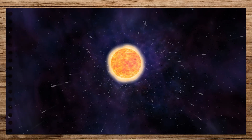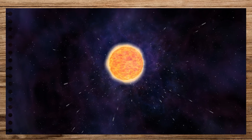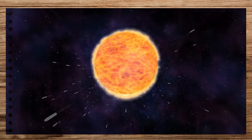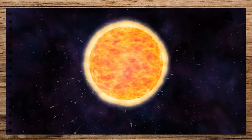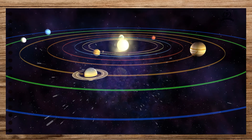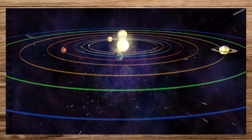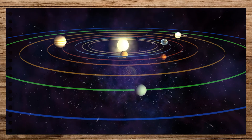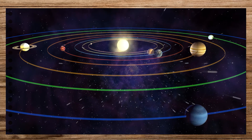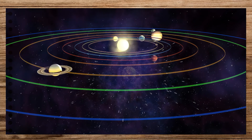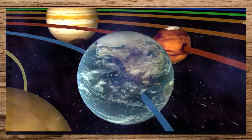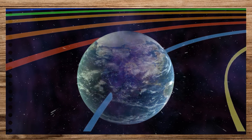The Sun is also a star. It looks big as it is very close to the Earth. The Sun is the largest member of the solar system and is located at its center. The diameter of the Sun is about 109 times greater than the diameter of the Earth. The Sun is the main source of heat and light for all forms of life on Earth.